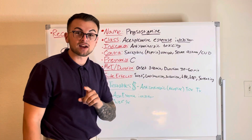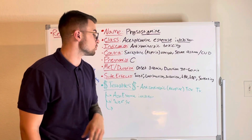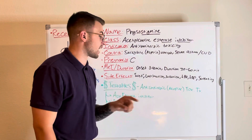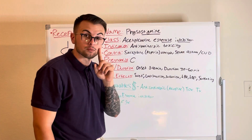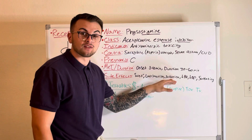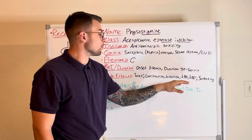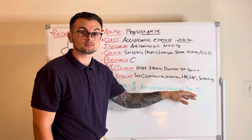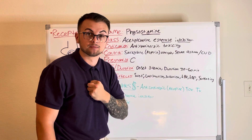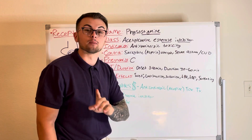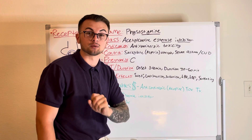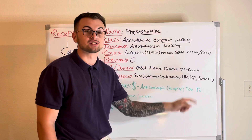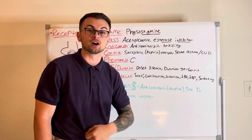The side effects of this drug may include some wet cholinergic symptoms such as lacrimation or tear production, salivation, bradycardia, hypotension, bronchospasm, sweating — remember sweat is caused by a release of acetylcholine — and hyperperistalsis, or fast gut motility.